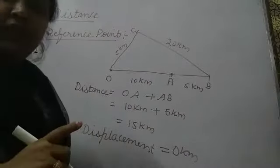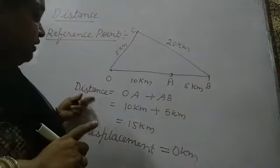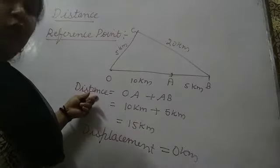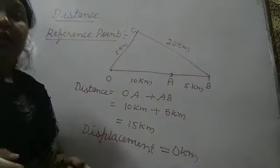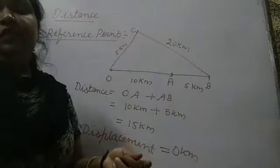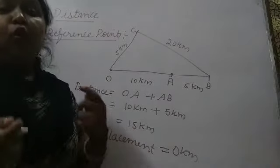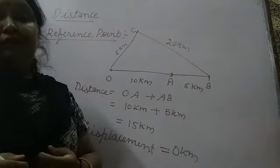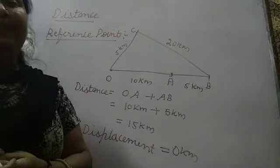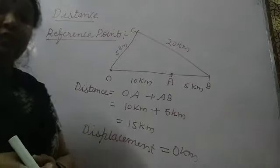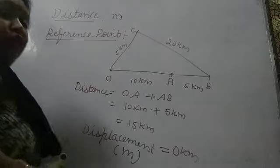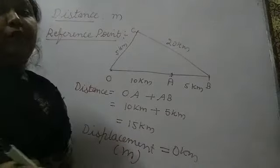The very important points about distance and displacement are: distance and displacement can be equal; displacement can be 0; the distance travelled cannot be 0; and distance travelled is always greater than or equal to displacement — it will never be more than the distance travelled. Since displacement is the shortest distance between final and initial positions, it will always be less than or equal to the distance travelled. The SI unit of both distance and displacement is the meter.